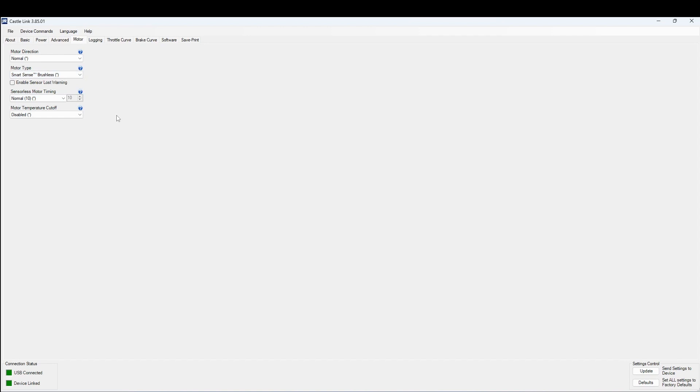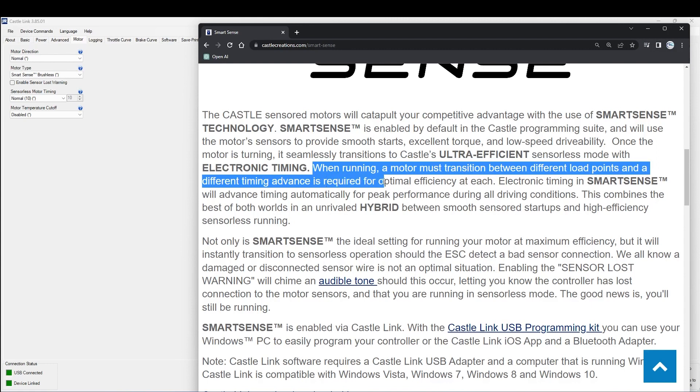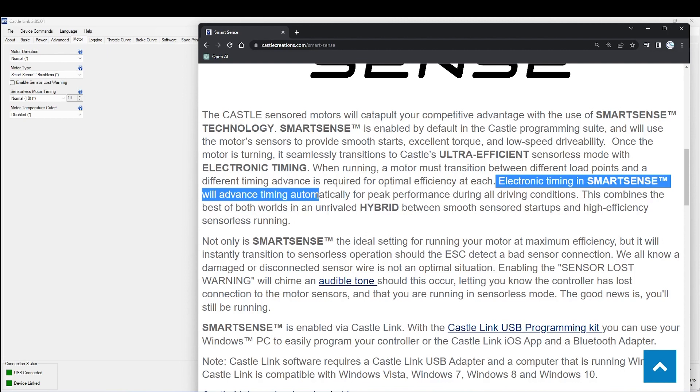Let's talk about what smart sense means for Castle Creations electronic speed controls. Here we see smart sense is enabled by default within the programming suite. Here we have the asterisks representing the default options here under each drop down menu. It is true, smart sense has been enabled by default right from the factory. And it uses the motor sensors to provide smooth starts, excellent torque and low speed drivability. Once the motor is turning or rotating under very low RPM, this implies it seamlessly transitions to Castle's ultra efficient sensorless mode with electronic timing.